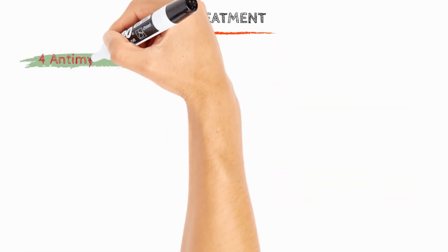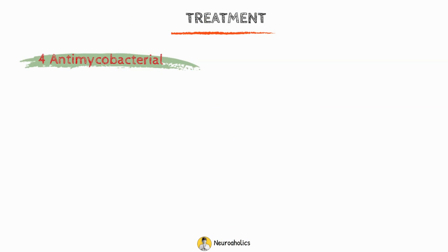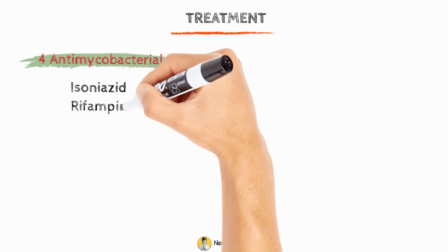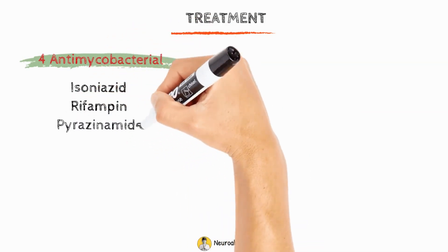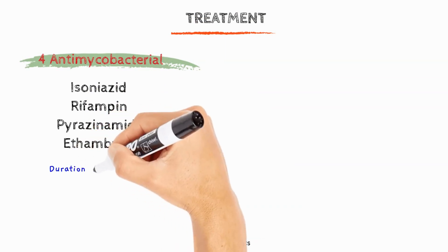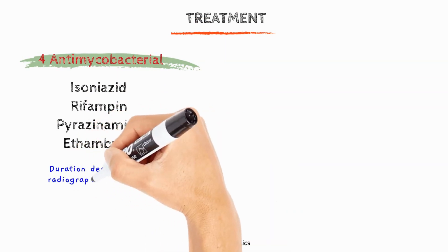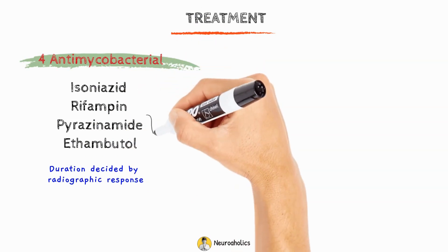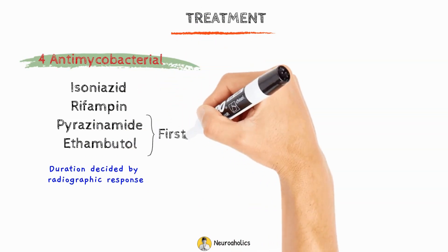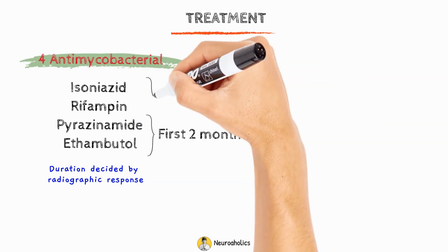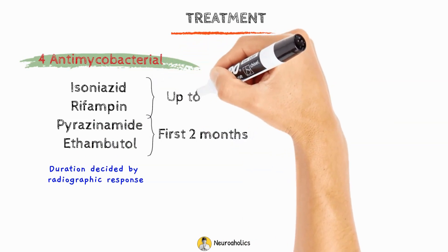The same combination of four antimycobacterial medications — isoniazid, rifampin, pyrazinamide, and ethambutol — used for tuberculous meningitis is also used for this condition, although with longer durations decided by radiographic response. Pyrazinamide and ethambutol must be discontinued after just two months due to their toxicity, while the other drugs may be taken for up to a year.